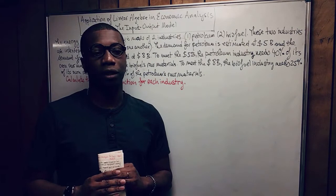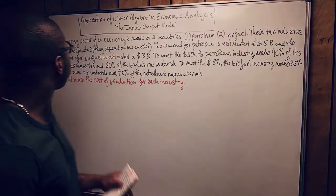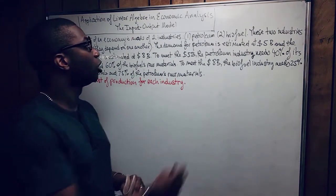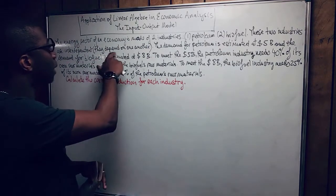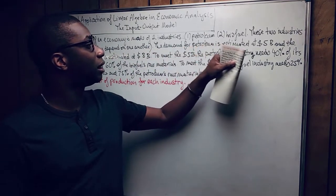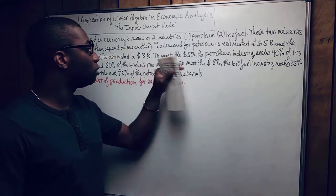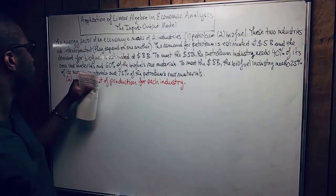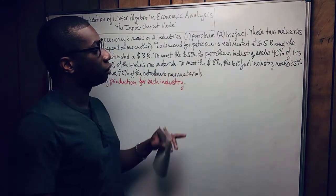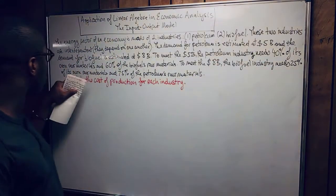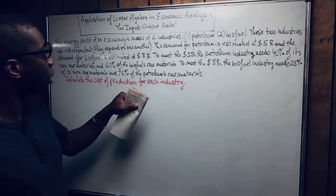This example is hypothetical — just for understanding the process. Let's say the energy sector of an economy has two industries: petroleum and biofuel. These two industries are interdependent. The demand for petroleum is estimated at $5 billion and the demand for biofuel at $8 billion. To meet the $5 billion, petroleum needs 40% of its own raw materials and 60% of biofuel's. To meet the $8 billion, biofuel needs 25% of its own raw materials and 75% of petroleum's. Calculate the cost of production for each industry.